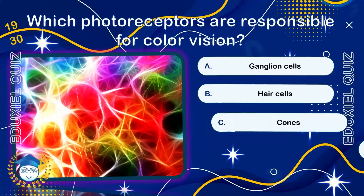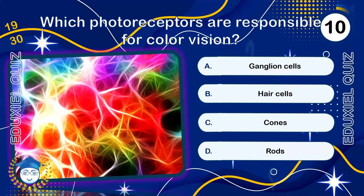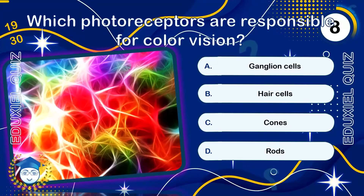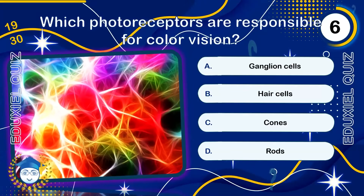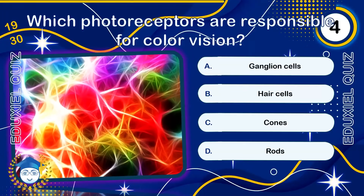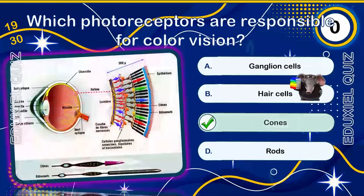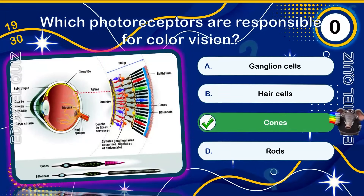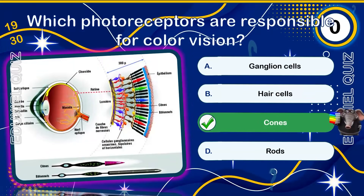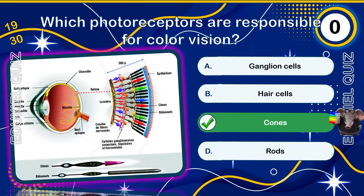Which photoreceptors are responsible for color vision? Cones are specialized photoreceptor cells in the retina responsible for color vision. Humans typically have three types, sensitive to red, green, and blue wavelengths. People with color blindness lack one type, reducing their ability to perceive the full color spectrum.